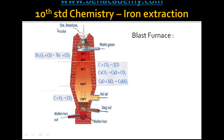The raw materials are hematite, that is the iron ore, limestone, and coke. They are added one by one into the blast furnace. When the coke reaches the bottom, hot air is blasted into the furnace. The carbon present in the coke is completely burnt into carbon dioxide, which is an exothermic reaction.